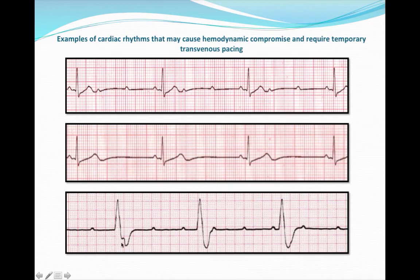Looking at the PR interval, we notice that there is no relationship. The P waves are marching out at their own beat. You have a couple of P waves hidden in the T's, and this is a third degree heart block.